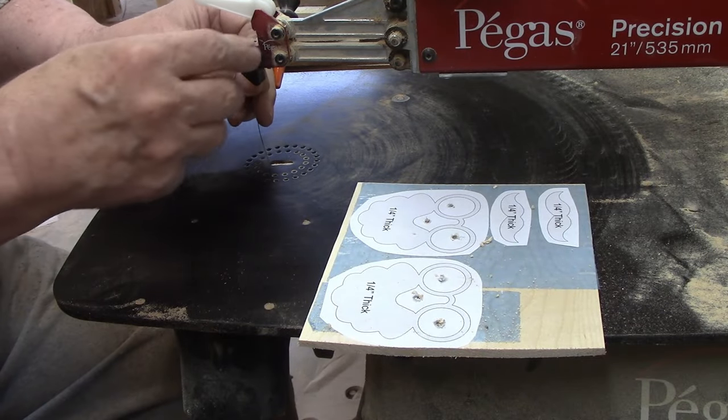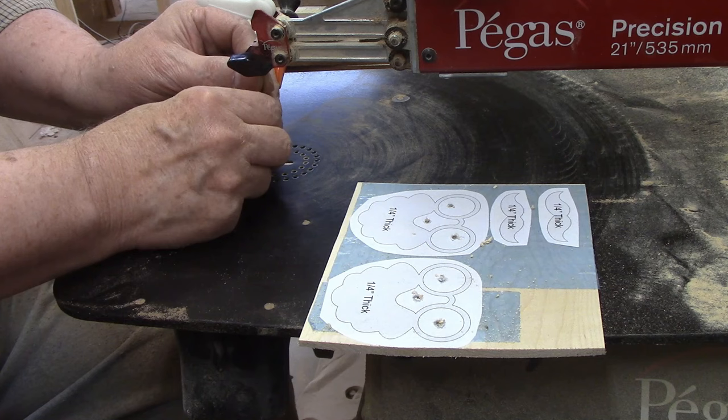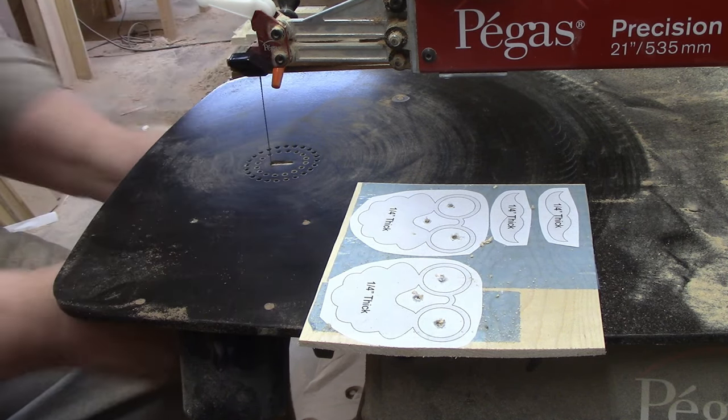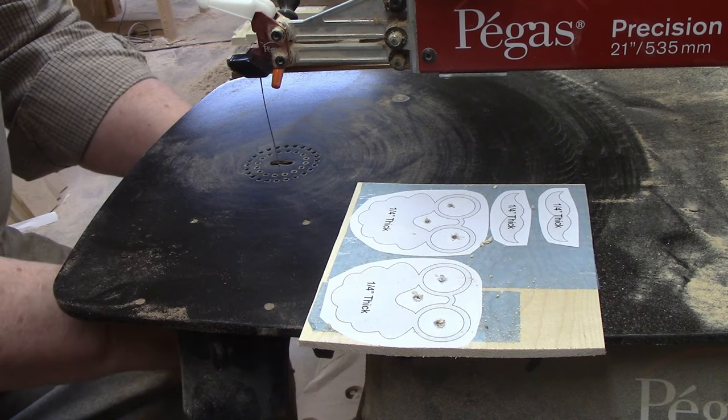I used a number nine Pegas modified geometry blade to cut the three-quarter inch walnut, but the remaining parts are made from quarter inch maple, so I switched to a number three blade.